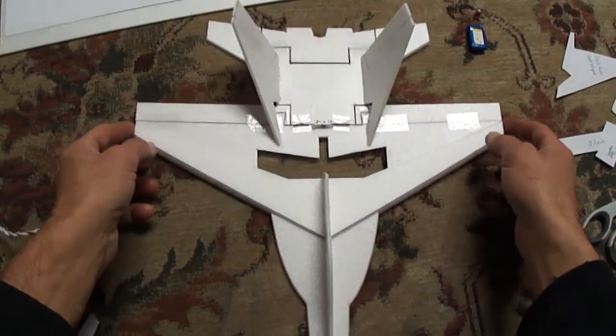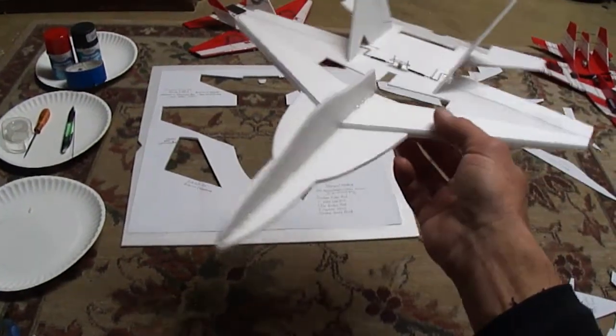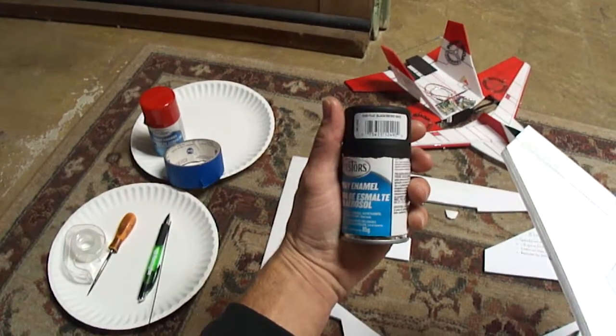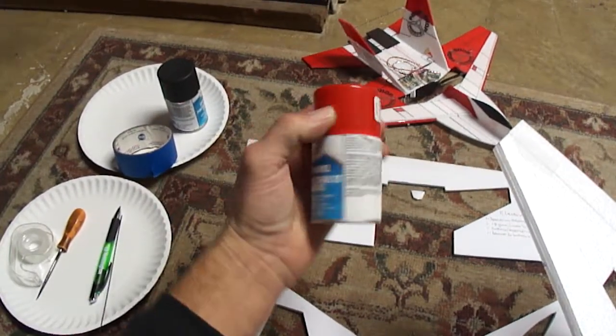Of course before you assemble any of the stuff, if you want to do paint, you would just go ahead and paint before you do any assembly. I usually use testers, there is some flat black, gloss red spray paint.